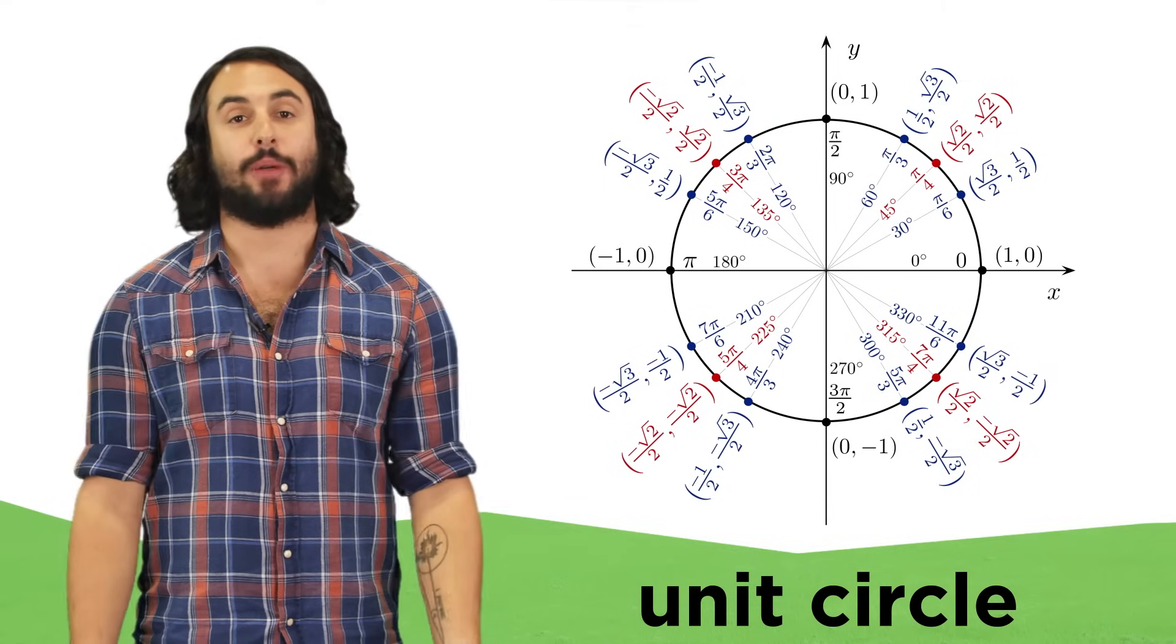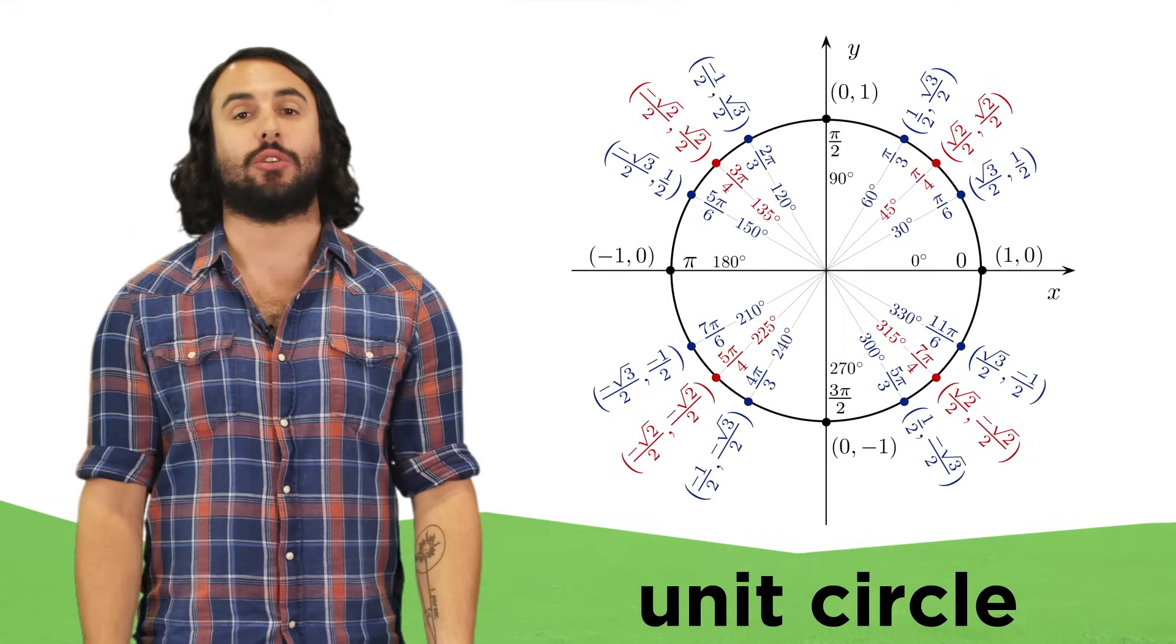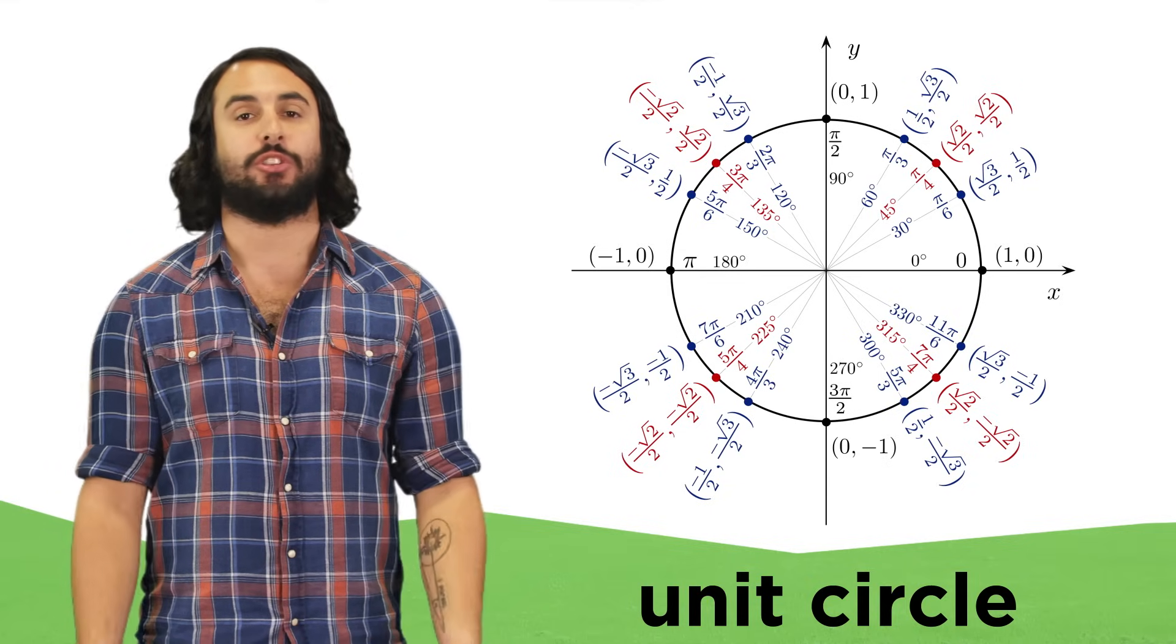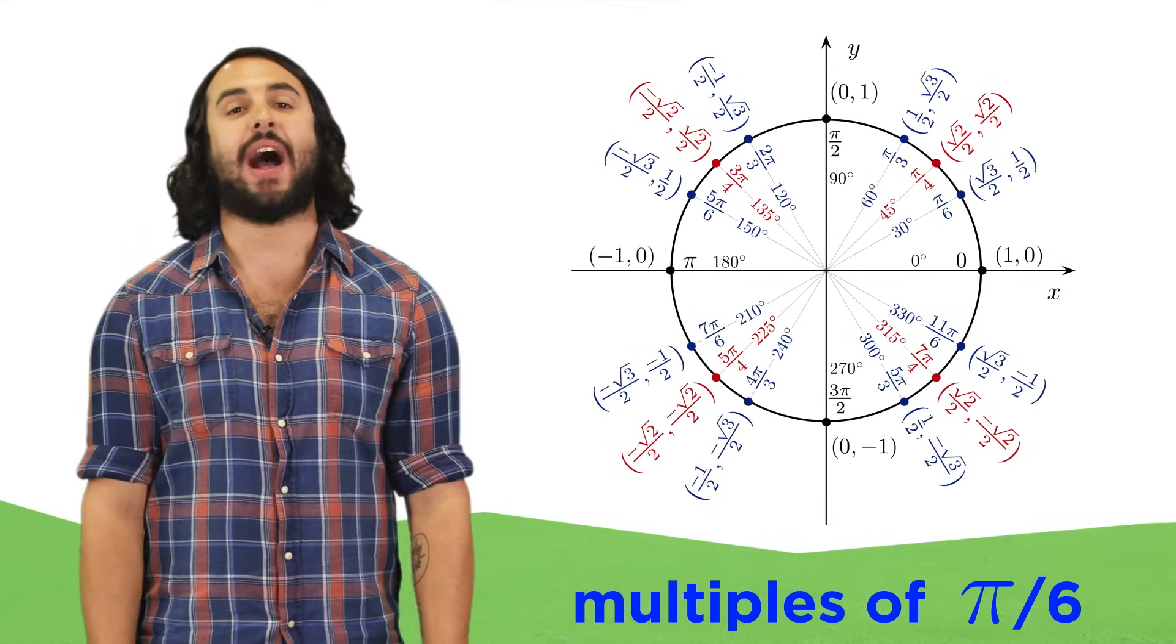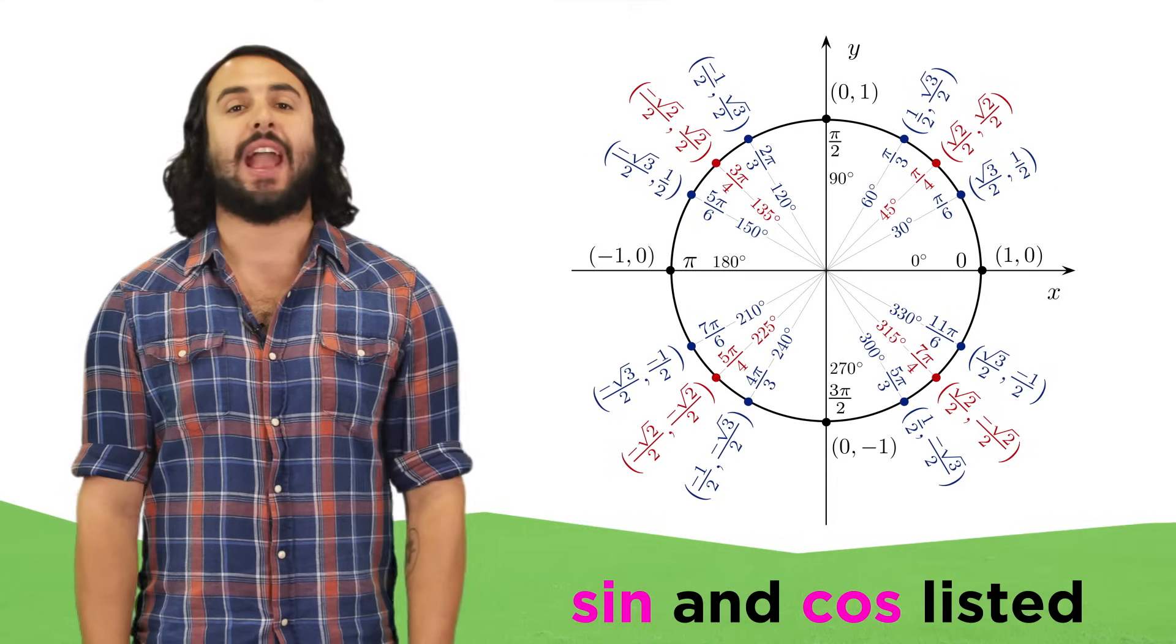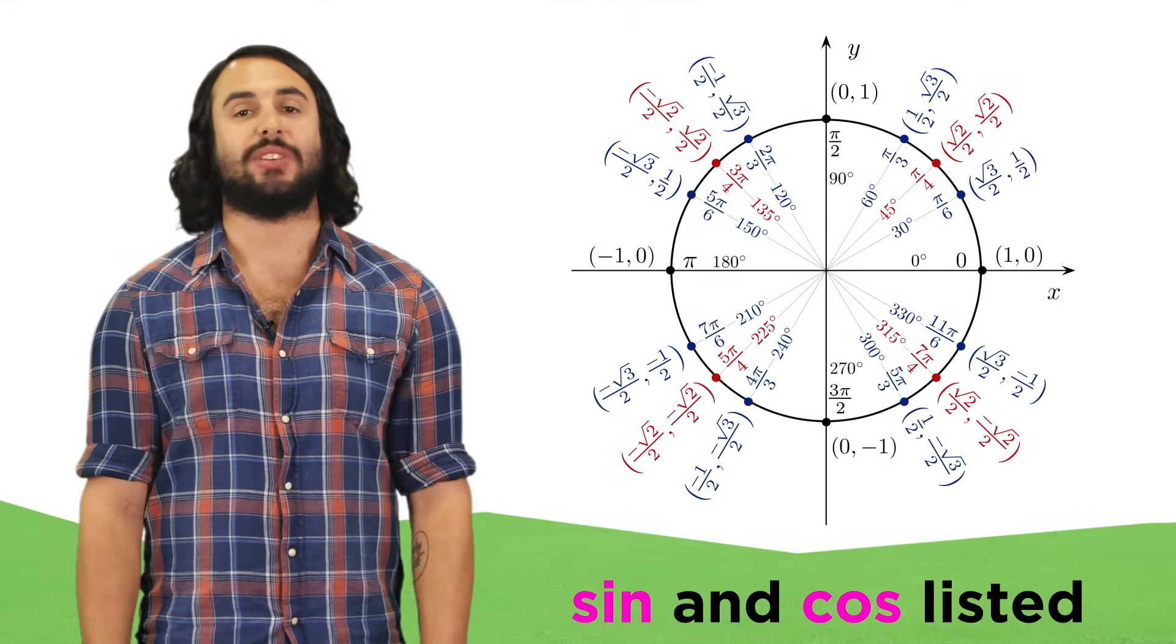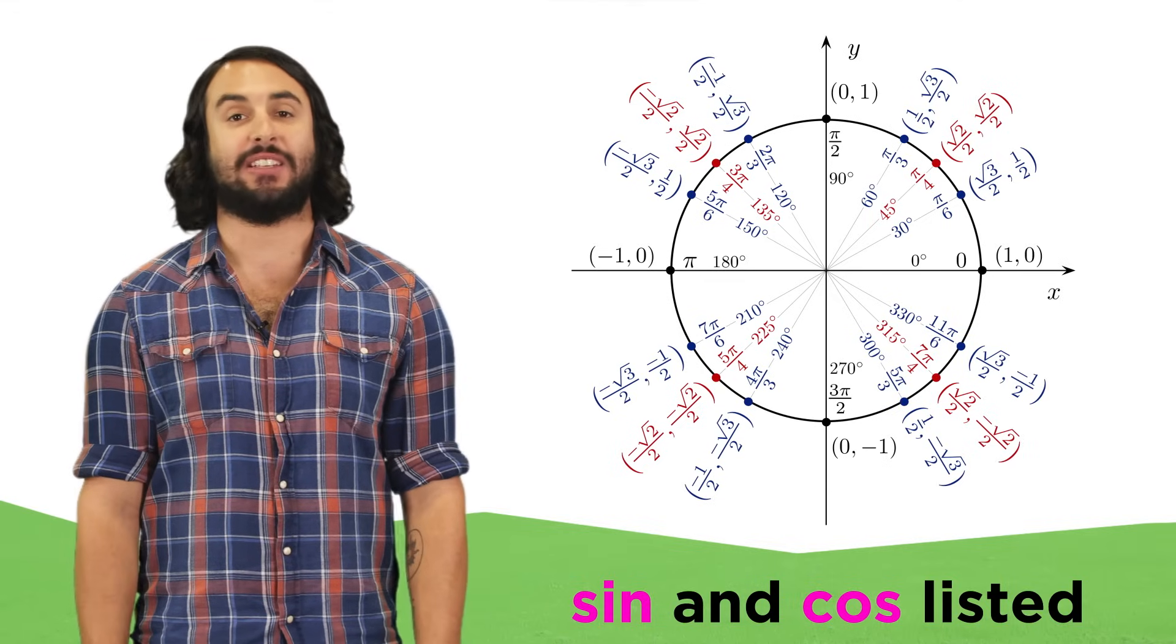Math students often have trouble with this thing. It's called the unit circle, and it's just a circle with a radius of one superimposed on the coordinate plane, with the center at the origin. Then we have all the angles that are multiples of π/6, as well as the multiples of π/4, and we have to know the sine and cosine values for these angles. Let's quickly go over some key points about the unit circle that will make it very easy to remember.